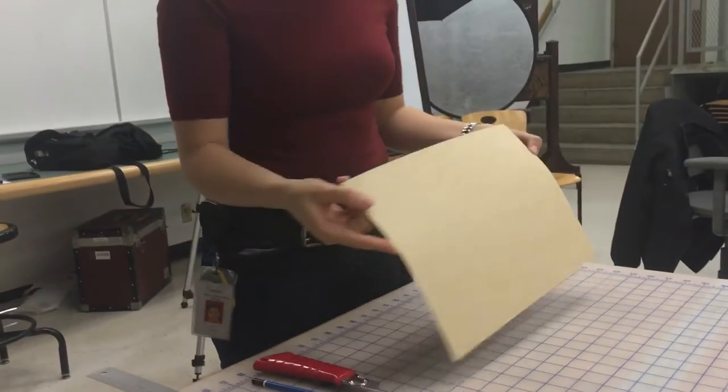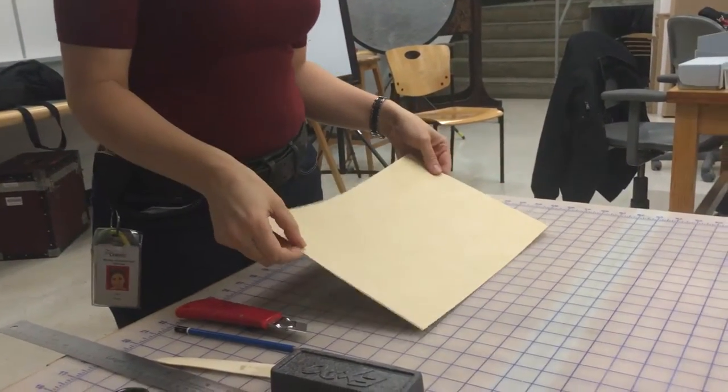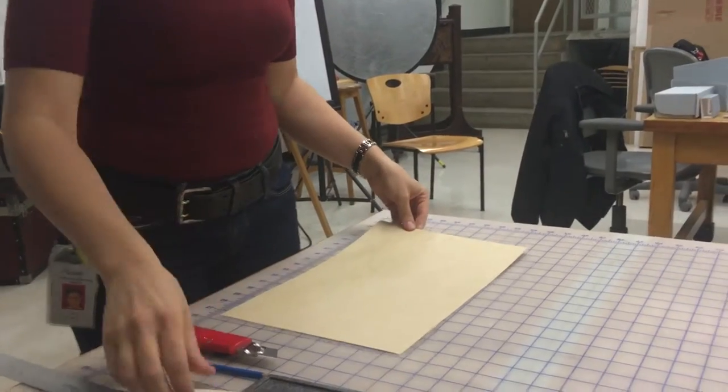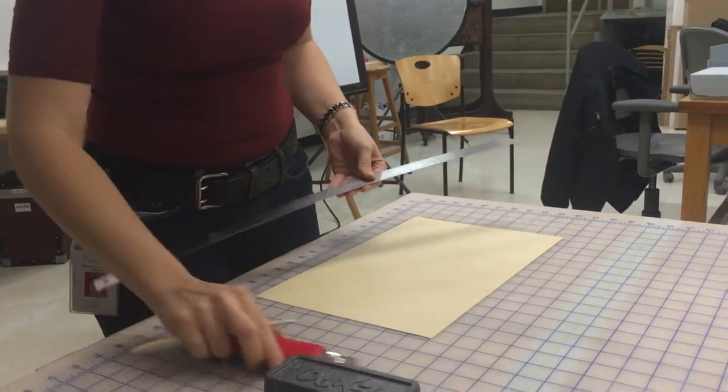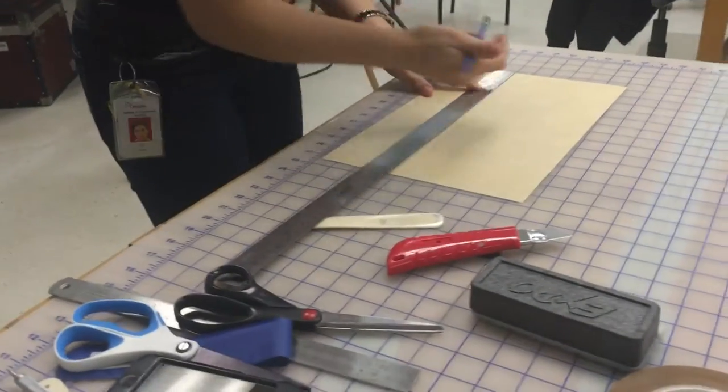I'm starting with a piece of board that we've pre-measured to be the proper size, and we're using one millimeter folder stock to do so. I've done the measurements already, so I'm just going to transfer them over to this piece of board.